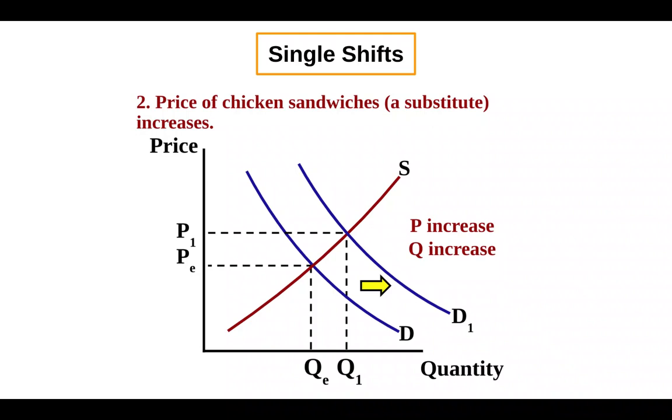And so when demand shifts, price and quantity will both move in the same direction, okay? So it's very important that when you're doing these single shifts, we're removing one curve by itself, that we get an accurate reading on what is happening to price and quantity.